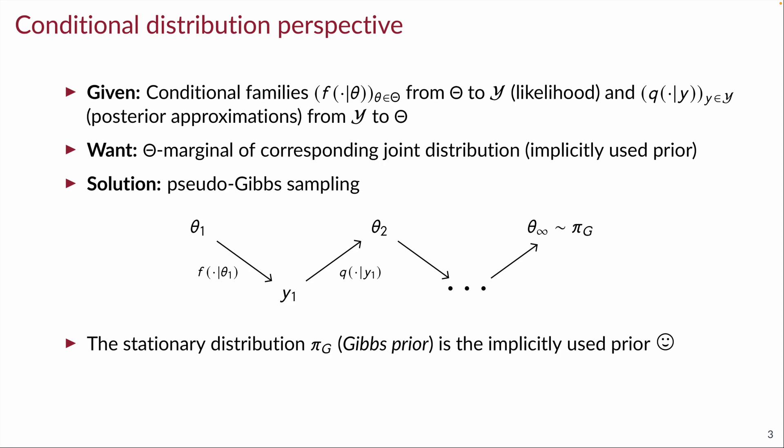In our setting, we start with any latent variable theta_1 and then simply alternatingly sample from the corresponding likelihood and then sample from the corresponding posterior approximation. If we continue this, then we will arrive at the stationary distribution, which is exactly our implicitly used prior. And we call this distribution the Gibbs prior.